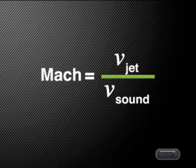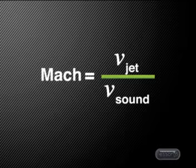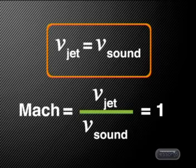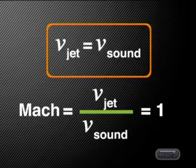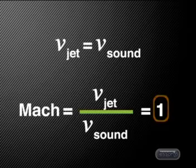People in the aircraft industry describe the speed of an aircraft using a term called the Mach number. This number is the ratio of the speed of the jet to the speed of sound. For the motion we have just been looking at, the speed of the jet is equal to the speed of sound, so the Mach number for a jet traveling at the speed of sound is Mach 1.